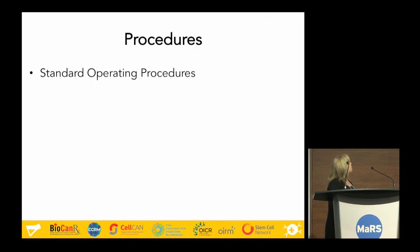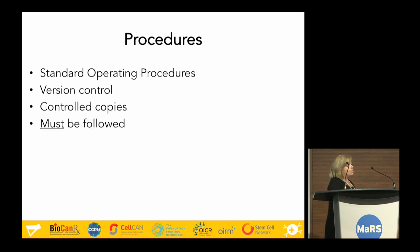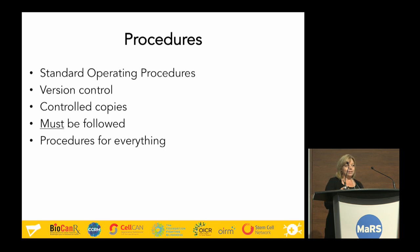For procedures, SOPs require version control so that outdated SOPs are not floating around for someone to follow the wrong procedure. This is done through controlled copies — someone numbers copies, puts them on the floor, and makes sure the old version comes back before the new one goes out. SOPs must be followed — they must, must be followed. In research labs people sometimes only loosely follow procedures, but here you have to follow them. There are procedures for everything, including an SOP for writing an SOP and an SOP for mopping the floor.